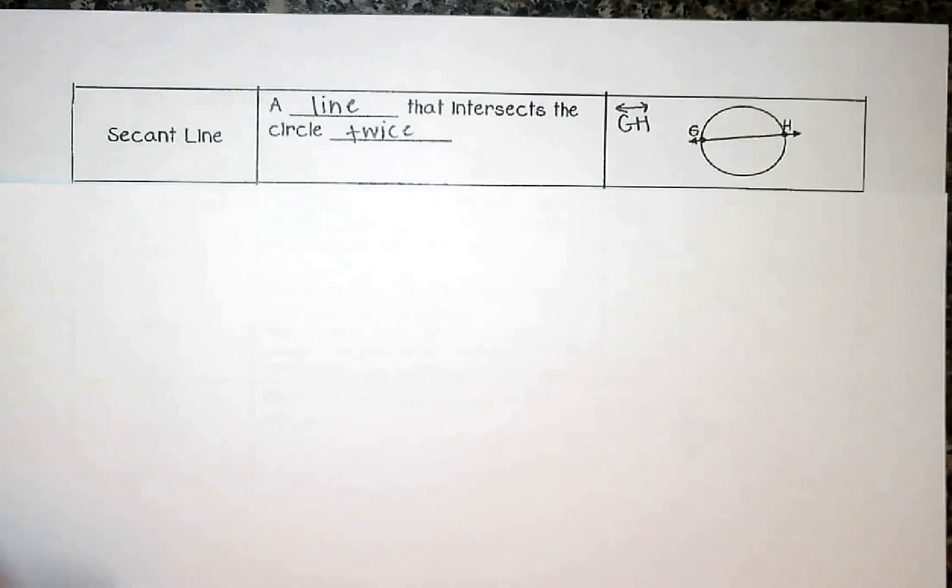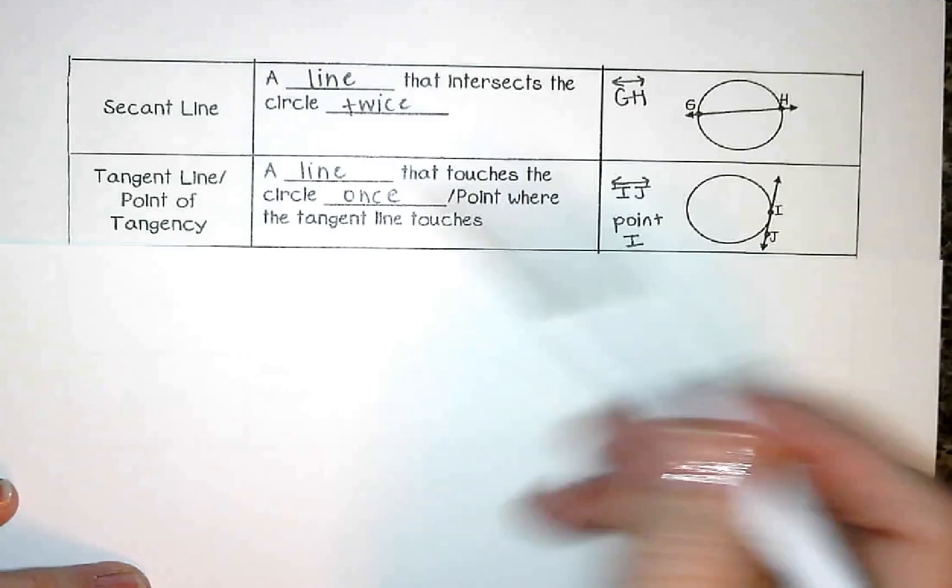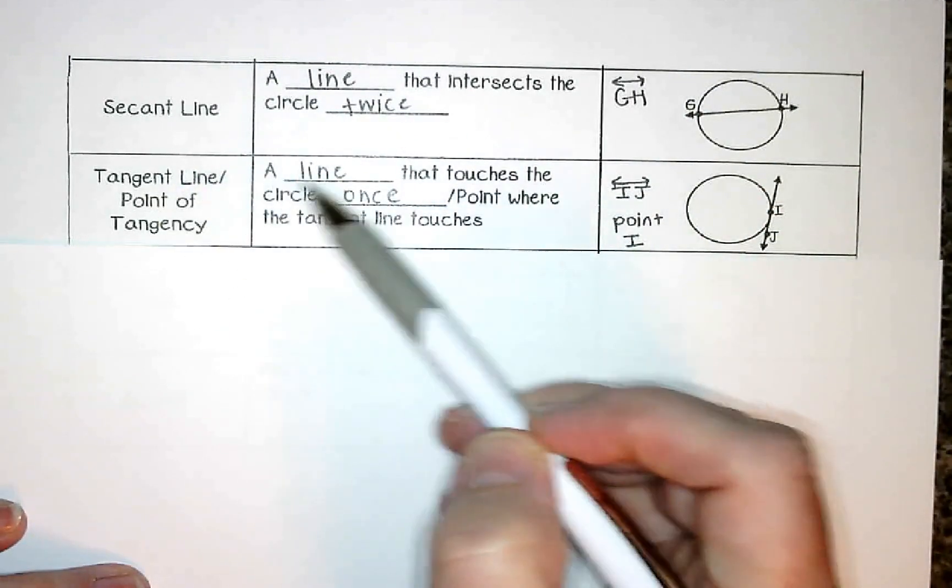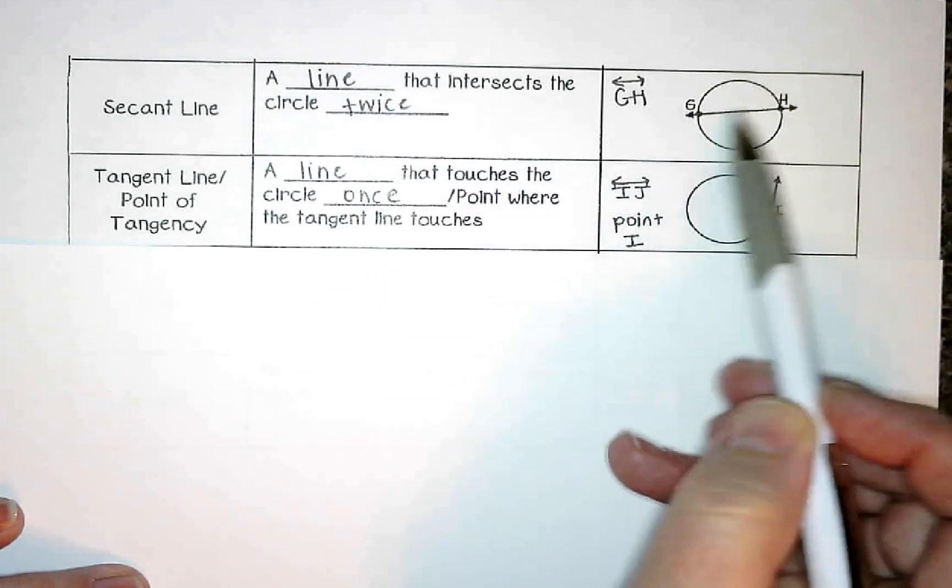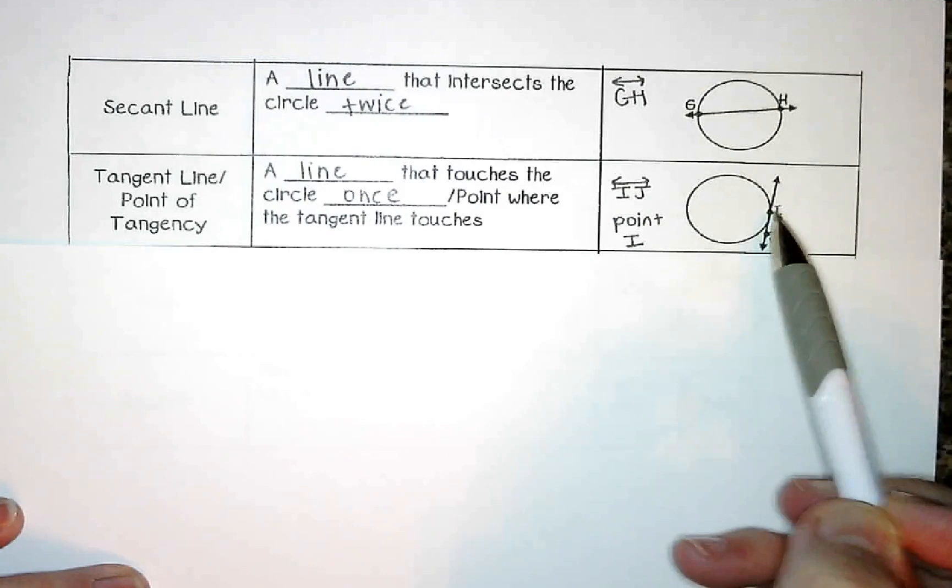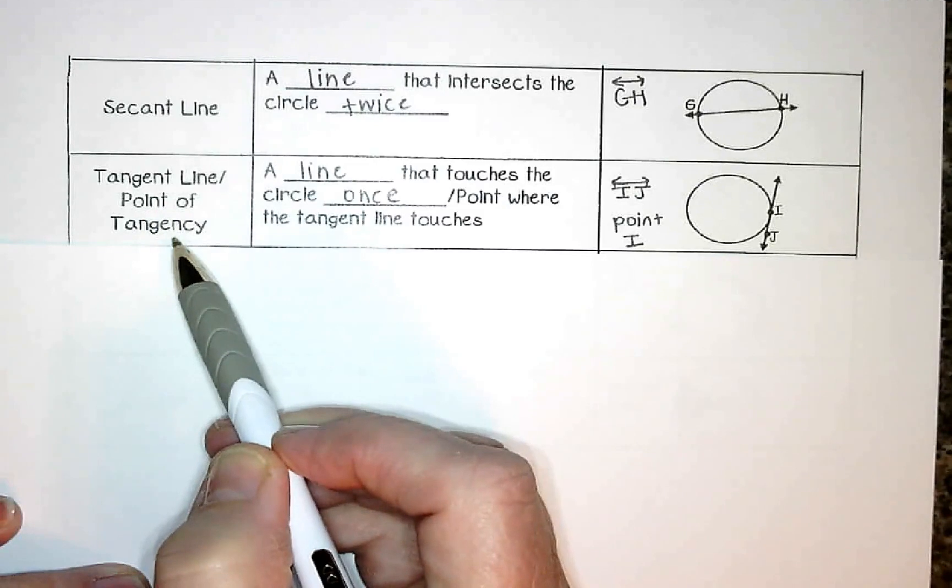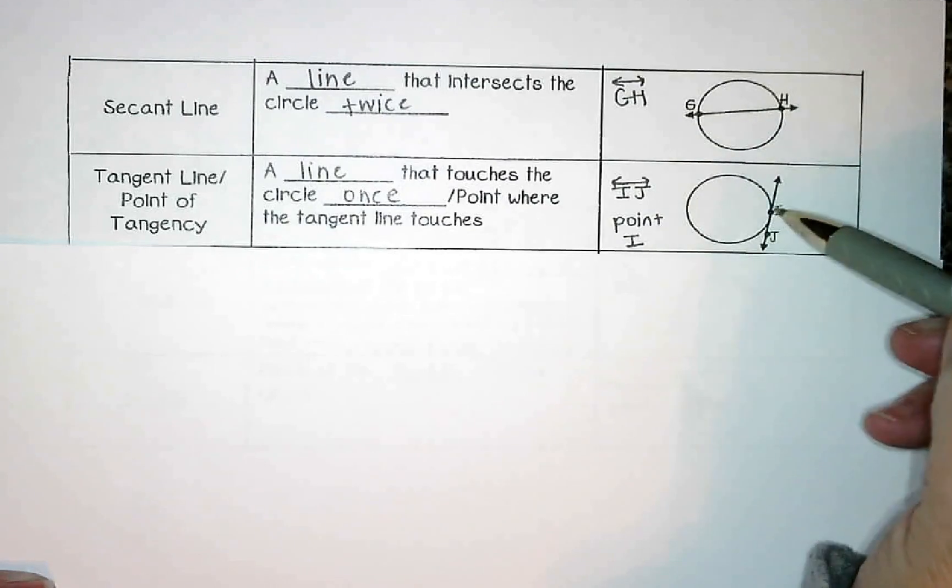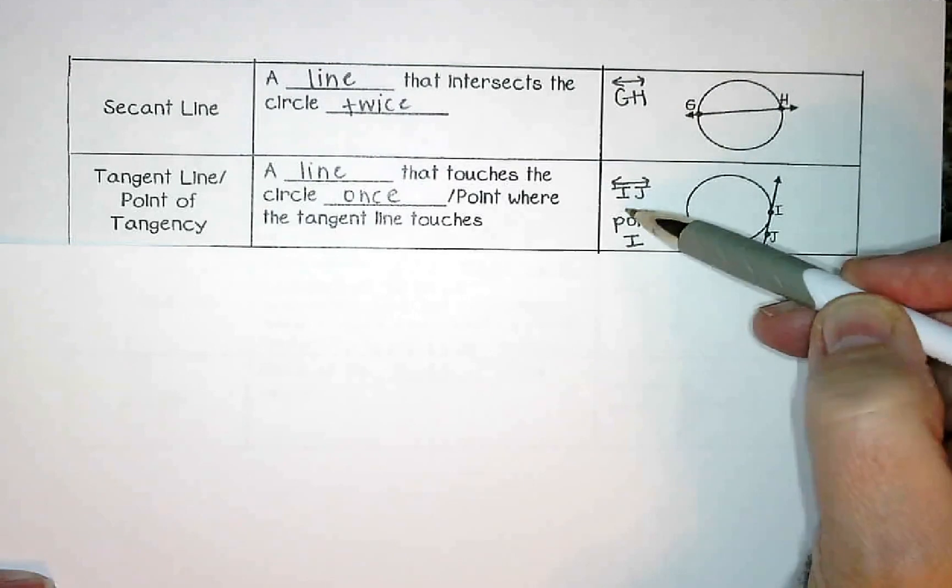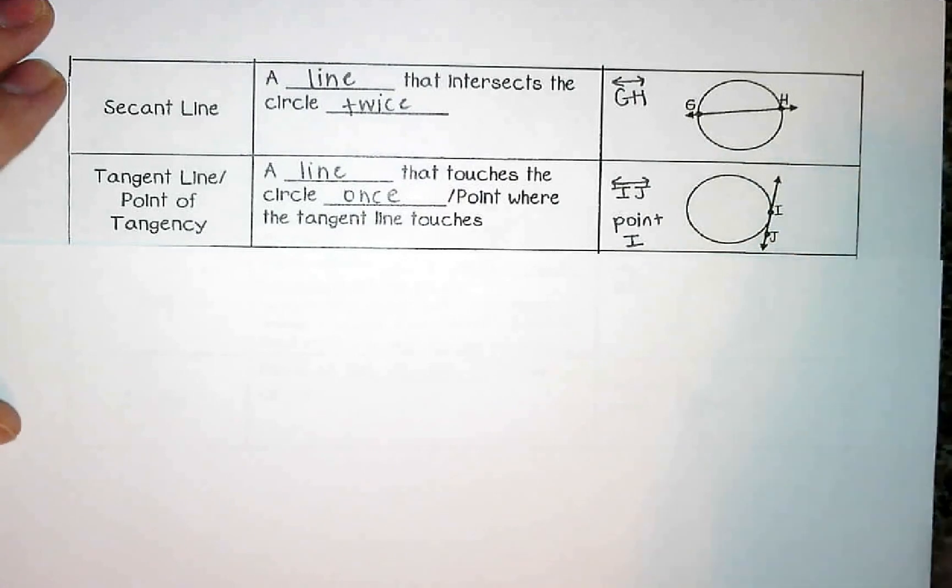The next one is called a tangent. Again, these are both lines, so we're going to have arrows on both ends. So a tangent line is a line that touches the circle once. Notice up here the secant was twice. A tangent is once. Now this point where it touches the circle, that's called the point of tangency. The point of tangency is the point where the tangent line touches the circle just at this one single point. So a tangent is a line, so we would label it with line IJ. And the point of tangency would be this point right here where it touches the circle at that one spot.